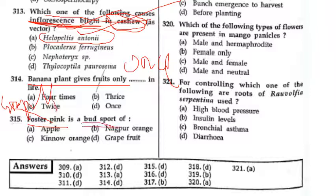Mango में कैसा type का पैनीकल मिलेगा? Male type — female flower is available, Hermaphrodite. But female flower is not available separately in mango. याद रखेंगे यह चीज.